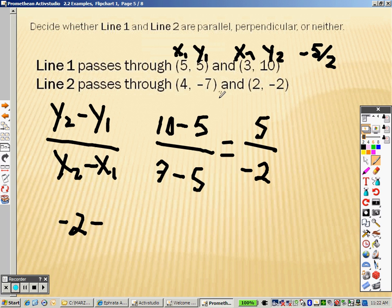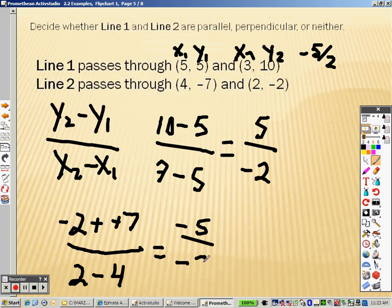y2 is negative 2, minus y1, which is negative 7. Divided by x2, which is 2, minus x1, which is 4. That's like saying plus a positive. So, I get negative 2 plus 7, which is negative 5. And 2 minus 4 is negative 2. And that's not negative. That's positive 5, right? Because negative 2 plus 7 is positive 5. So, I end up getting negative 5 over 2 for this one. Since they are the same, it is a parallel line.